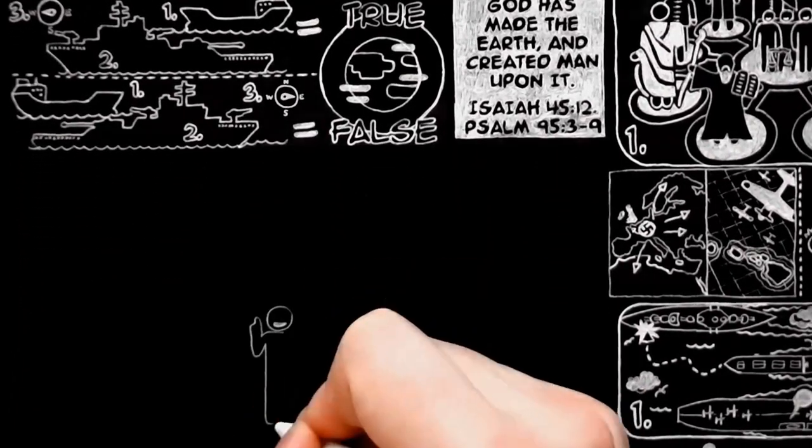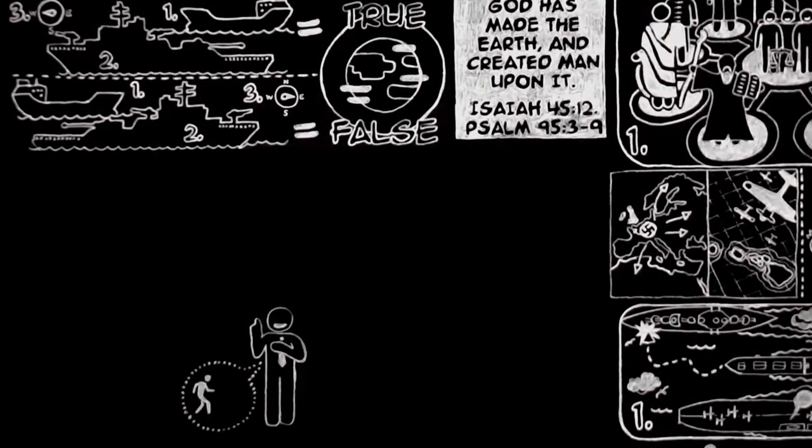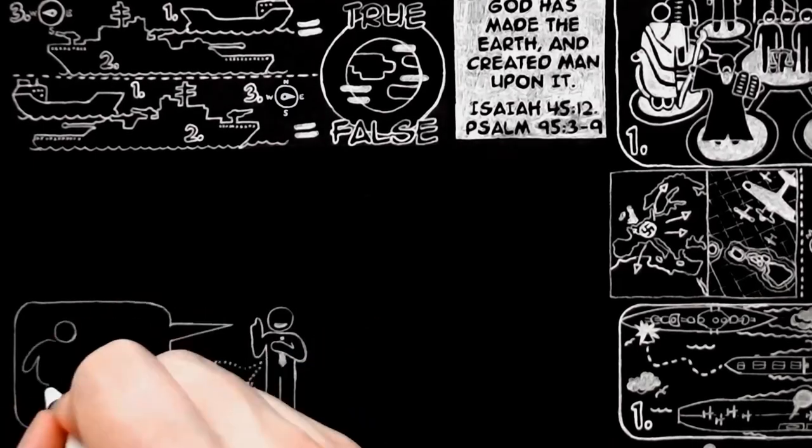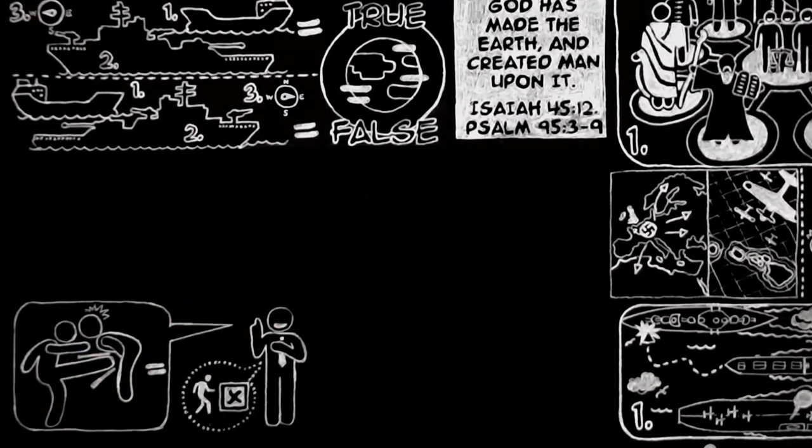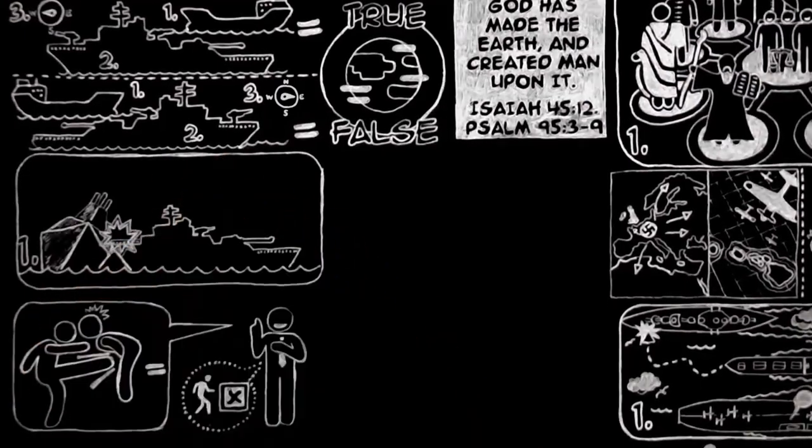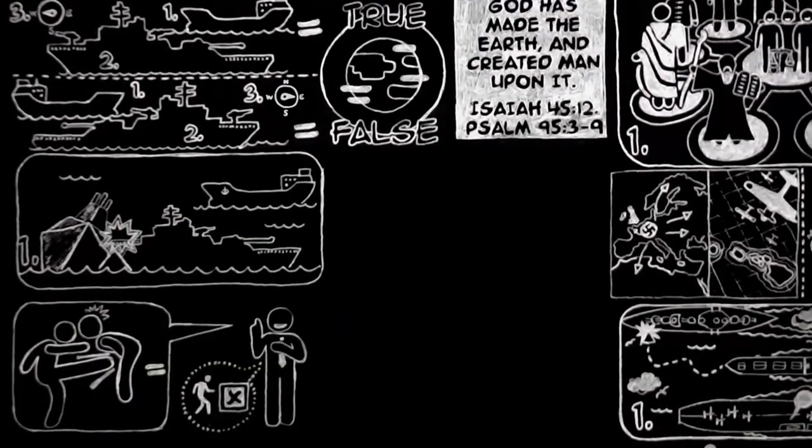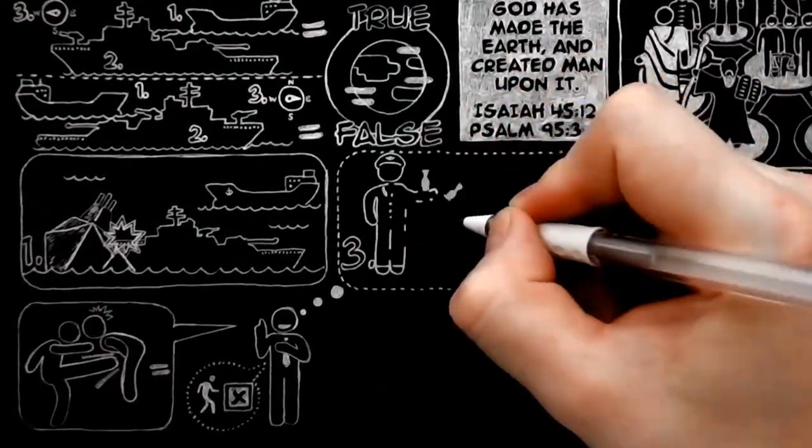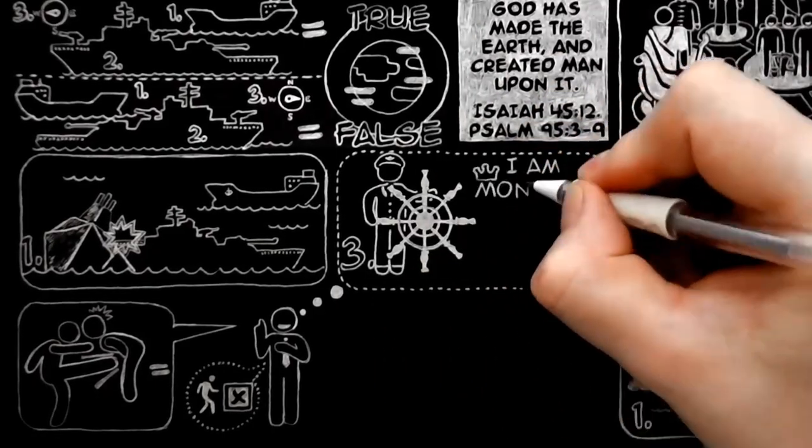For example, let us go back to the man who says that a thing cannot be wrong unless it hurts some other human being. He quite understands that he must not damage the other ships in the convoy, but he honestly thinks that what he does to his own ship is simply his own business.